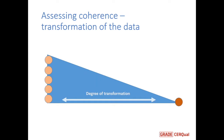In the process of creating a more interpretive finding, it may be the case that some of the underlying detail from the primary studies is not retained. In that case, issues around coherence may arise. It would be a trade-off between having a finding which allows you to develop a hypothesis or theory, and on the other hand, including all the detailed descriptive information that underlies or is part of the underlying data.